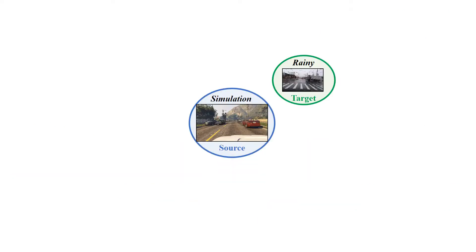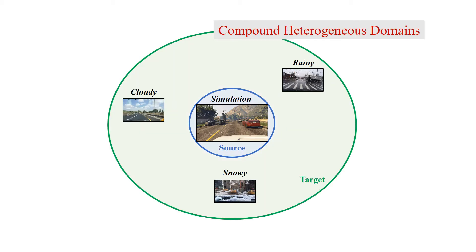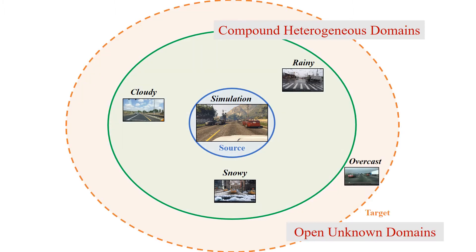Traditional domain adaptation mainly tackles pairwise adaptation with a distinct target domain. However, in real world, we are usually facing compound heterogeneous domains with mixed factors. Moreover, there are also open unknown domains out there during the AI system deployment.